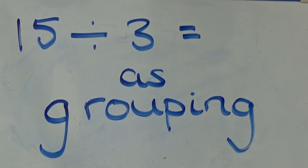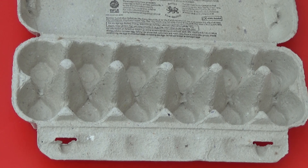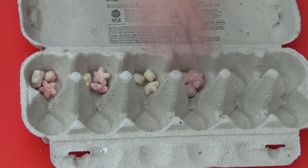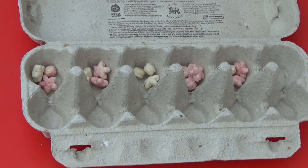Now I'm going to look at 15 divided by 3 again, but this time I'm going to do division as grouping. I'm going to divide my cereal pieces into groups of 3 and put each group of 3 into a section of the egg box. There are 5 sections of the egg box, each containing 3 pieces. So 15 divided into groups of 3 equals 5.